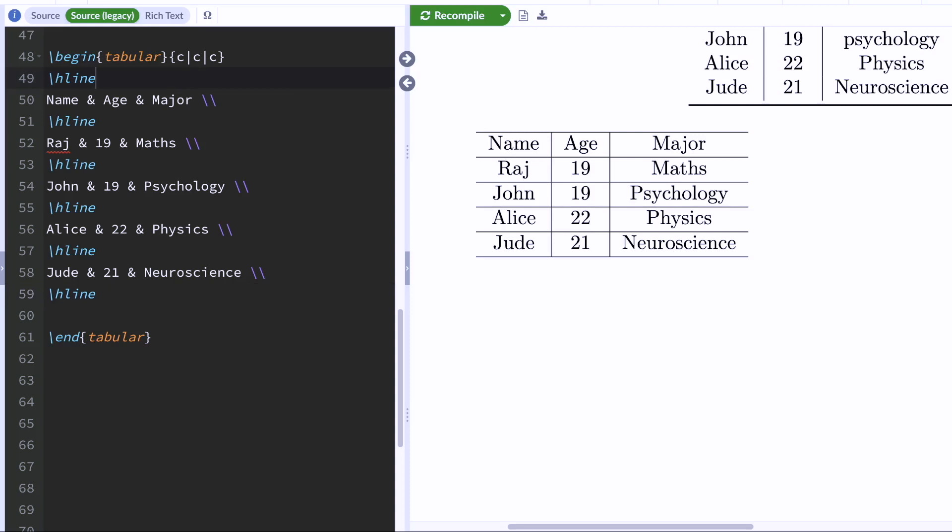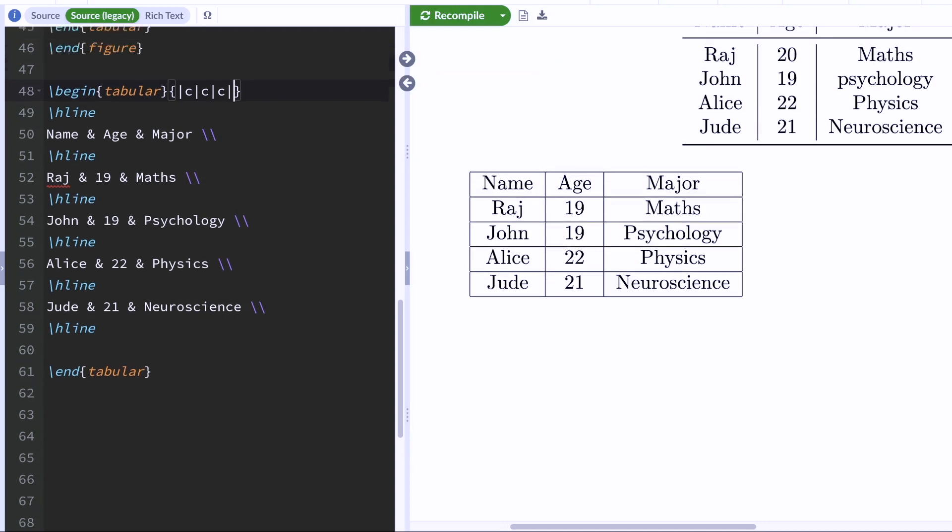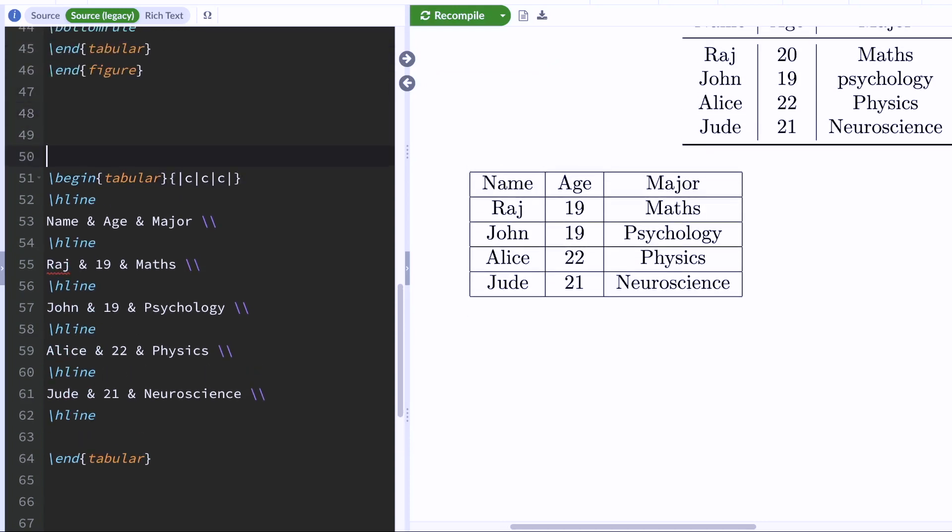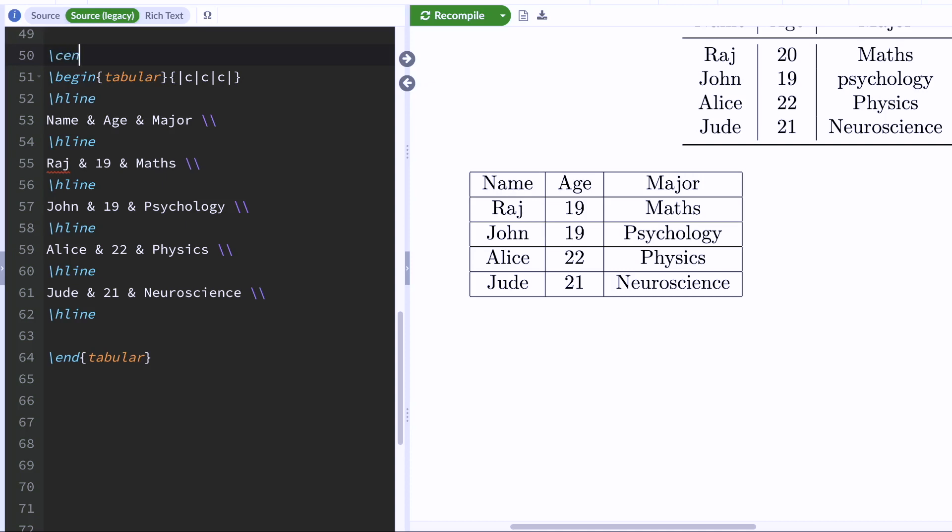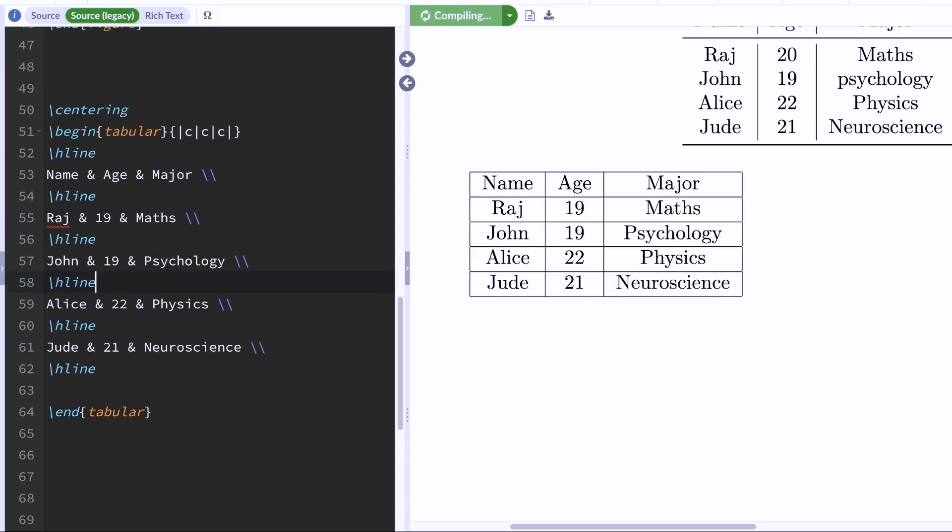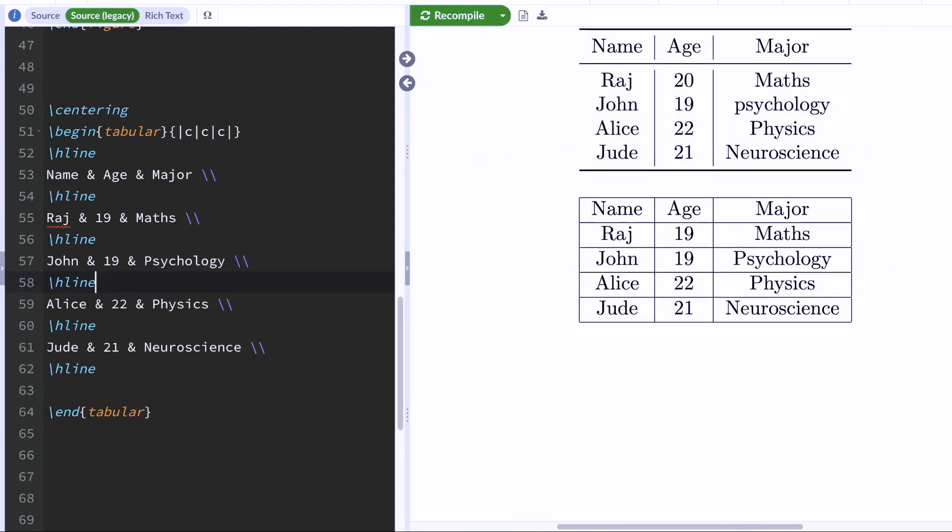Now, let's add two vertical lines right here so that our table looks better. And you can do that by using the pipe symbol. Now, we want this table to be centered. And you can use the centering declaration for that. So if I type centering before the table environment command, my table will be centered.